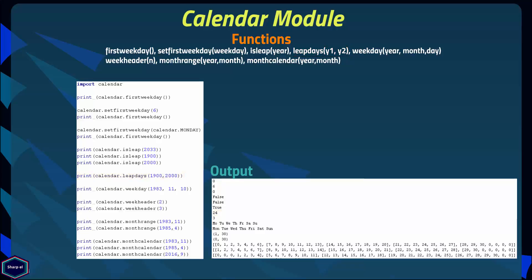The weekday() function takes three arguments — year, month, and day — and it returns the day of the week. In this example I have given 10th November 1983, and the weekday() function returns integer value 3, which is Thursday.